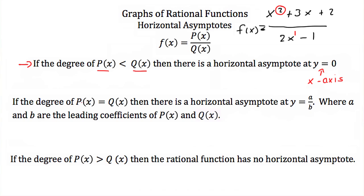If the degree of p(x) and q(x) are equal, then there is a horizontal asymptote at y = a/b, where a and b are the leading coefficients of p(x) and q(x). For example, if the numerator is x² + 3x + 2 and the denominator is 2x², both have degree 2. The leading coefficients are 1 and 2, so the horizontal asymptote would be y = 1/2.